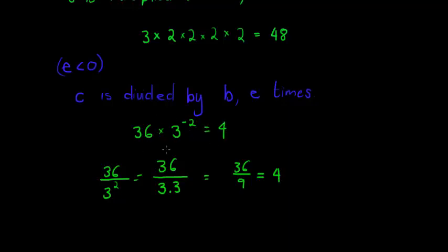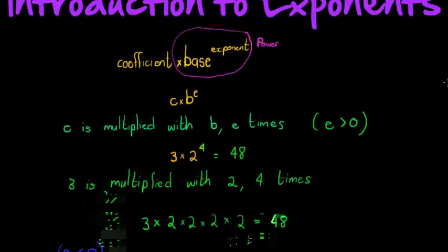So here negative exponents makes a little bit more sense to me by understanding this expression as C times B to the power of E is C is multiplied with B so many times, or C is divided by B so many times, depending whether E is positive or negative.